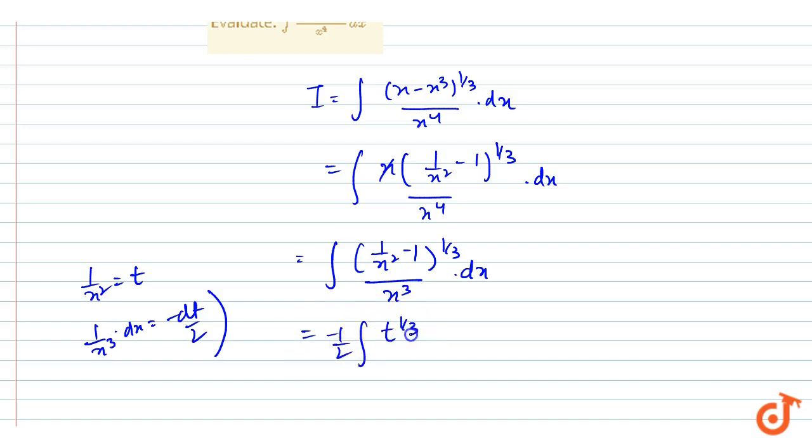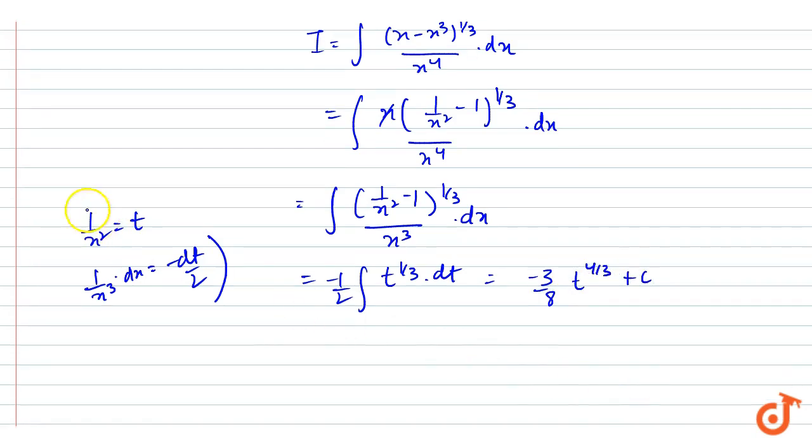Simple integrating, we will get -3/8 * t^(4/3) + c, and we have taken t as 1/x², so our final answer I is equal to -3/8 * (1/x² - 1)^(4/3) + c. So this is our answer.